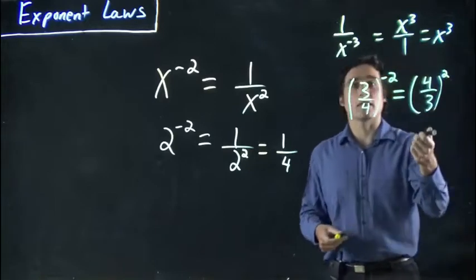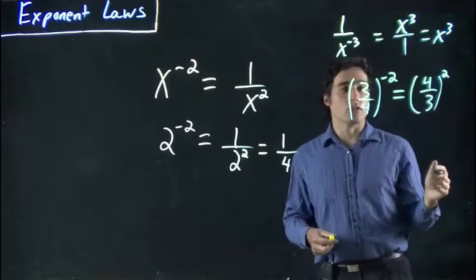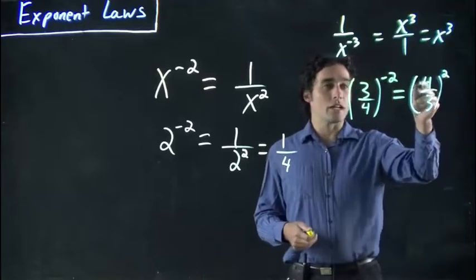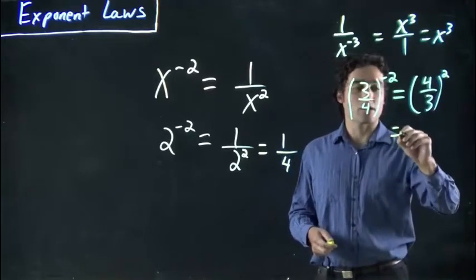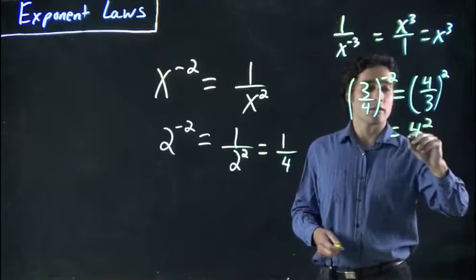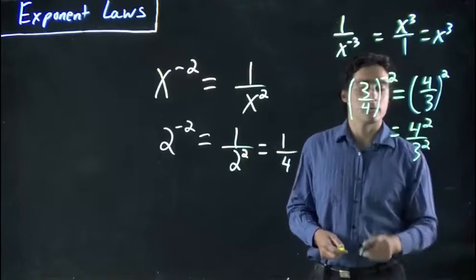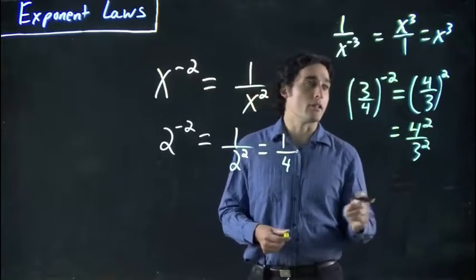And it's worth noting, while we're at it, we're going to look at another rule. If you have it outside the brackets, this can come inside. This would be the same as saying 4 squared over 3 squared, or 16 over 9 if we really wanted to finish it off.